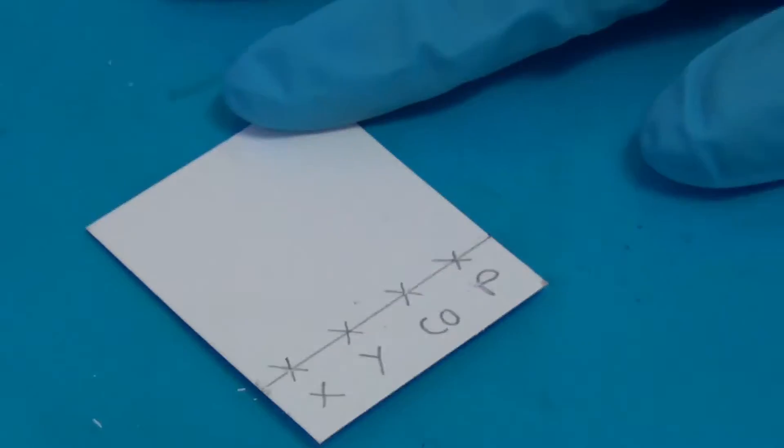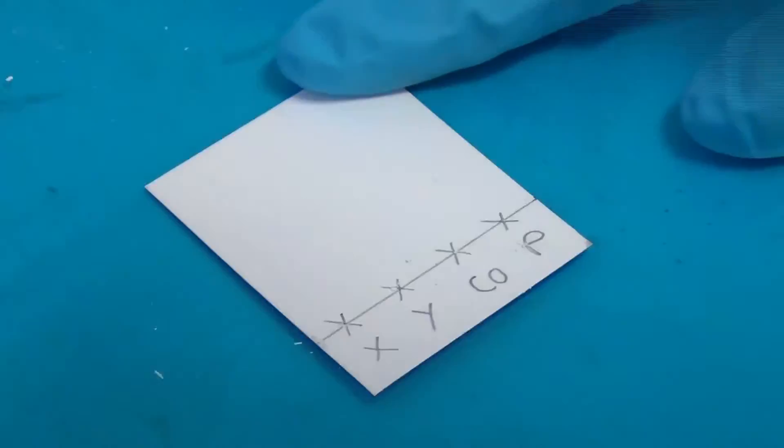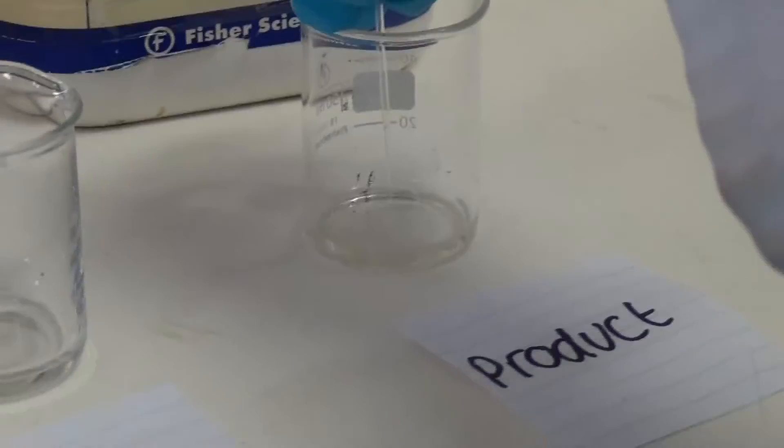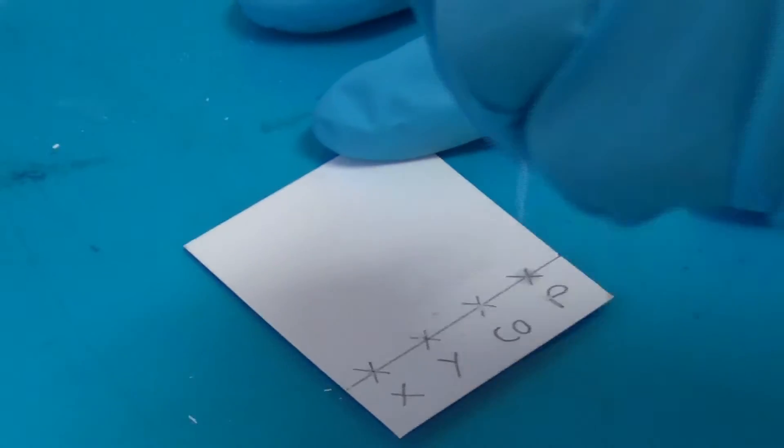Then repeat the spotting process using a clean capillary tube for the other solutions on the appropriately labelled mark on the TLC plate, and make sure to also spot each solution on the co-spot.